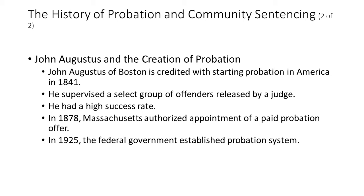John Augustus, known as the father of probation, is recognized as the first true probation officer. He was born in Woburn, Massachusetts in 1785. By 1829, he was a permanent resident of Boston and the owner of a successful boot-making business. It was his membership in the Washington Total Abstinence Society that led him to the Boston courts. As a member of the society, they were required to abstain from alcohol themselves and were convinced that abusers of alcohol could be rehabilitated through understanding, kindness, and sustained moral guidance rather than through conviction and jail sentences.